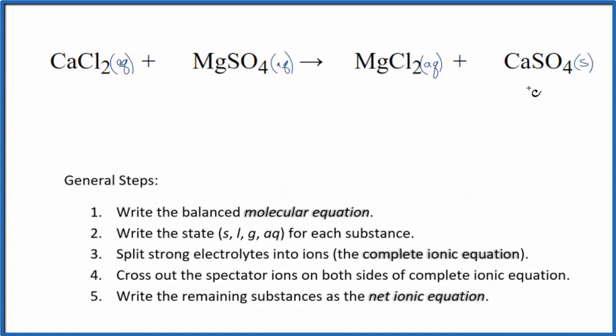So when we have this reaction, this will fall to the bottom of the test tube. A little bit will dissolve, but almost all of it falls to the bottom of the test tube in a precipitation reaction. So we have our states. Now we can split the strong electrolytes into ions. That'll give us the complete ionic equation.